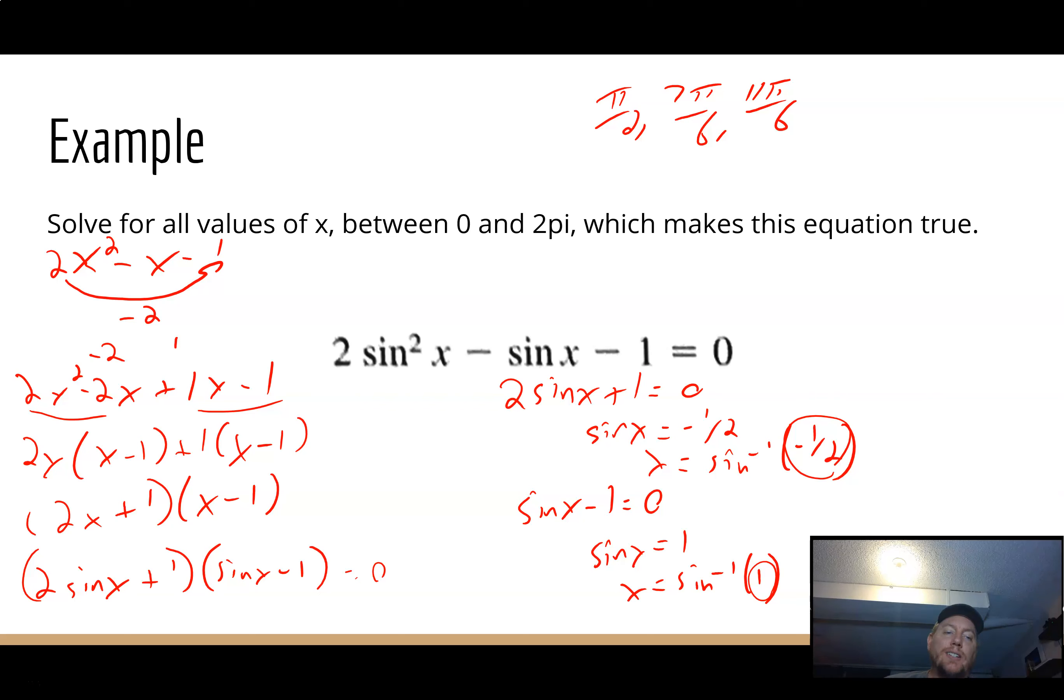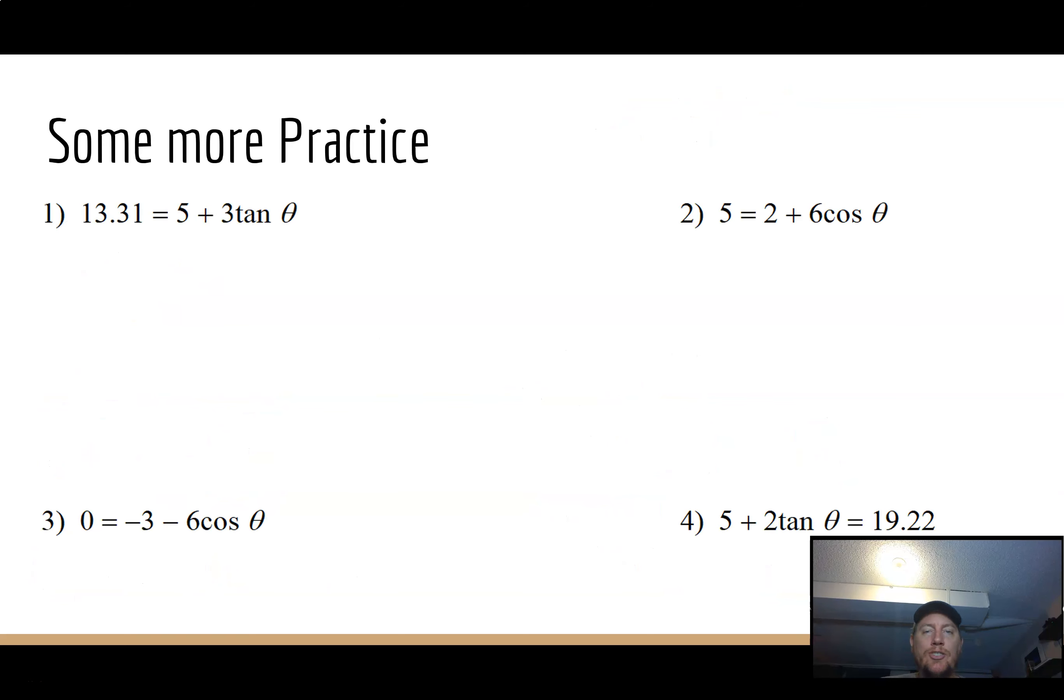So depending on how the question is phrased, those could be all your answers. You might need to add that period in. But this one is just all values between 0 and 2π, which makes it true. And that one worked. And let's just do some simple numeric ones to wrap this up.